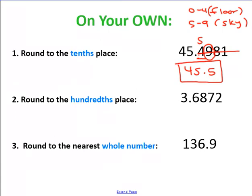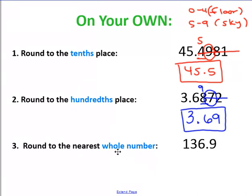Next, round to the whole number, which means we go to the ones place. Locate our number and look to the right. The nine tells me I'm going to go up again, so this six becomes a seven. Everything gets crossed out. Remember, I'm going to the nearest whole number, so there's no decimal. My answer is 137. Here's another one to the nearest ones place — that's also whole number. Locate your number, look to the right — this is a five through nine, so this two is going to become a three and everything gets crossed out. Because we're going to a whole number, there's no decimal in our answer.